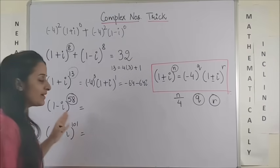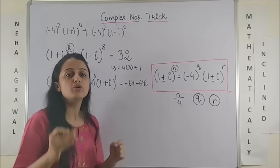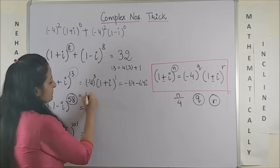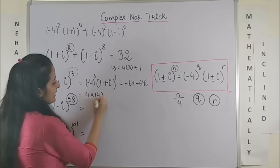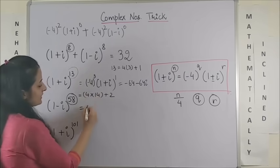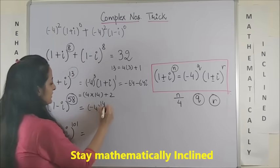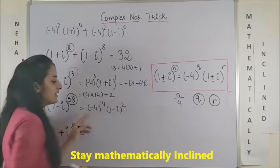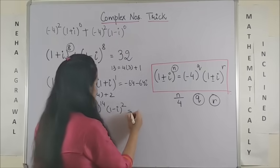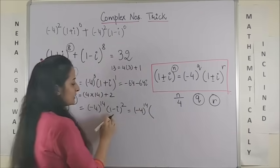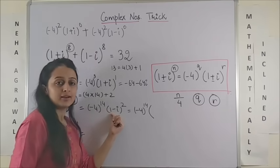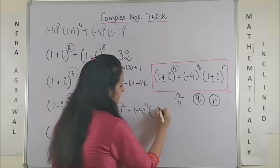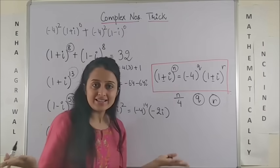So now in this one, when you divide 58 with 4, you know 14 into 4 is 56, so that means I can express it this way, plus 2 is the remainder. So it will be minus 4 raised to power 14, this time it's minus, so 1 minus iota whole square. Now this shall further become minus 4 raised to power 14, and this will be 1 plus iota squared, which will be 0 minus 2 iota. This is the answer.